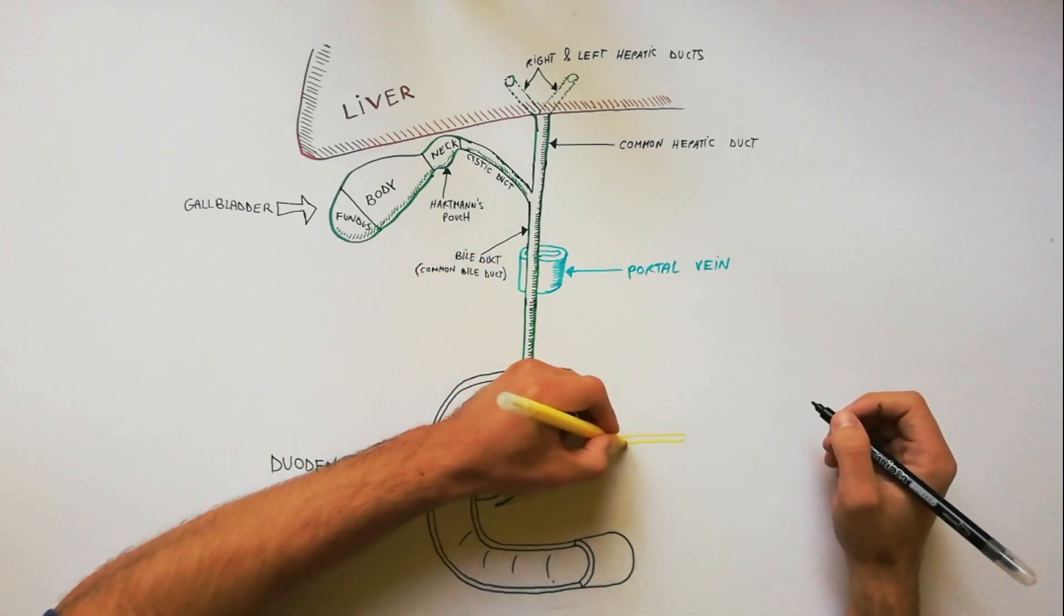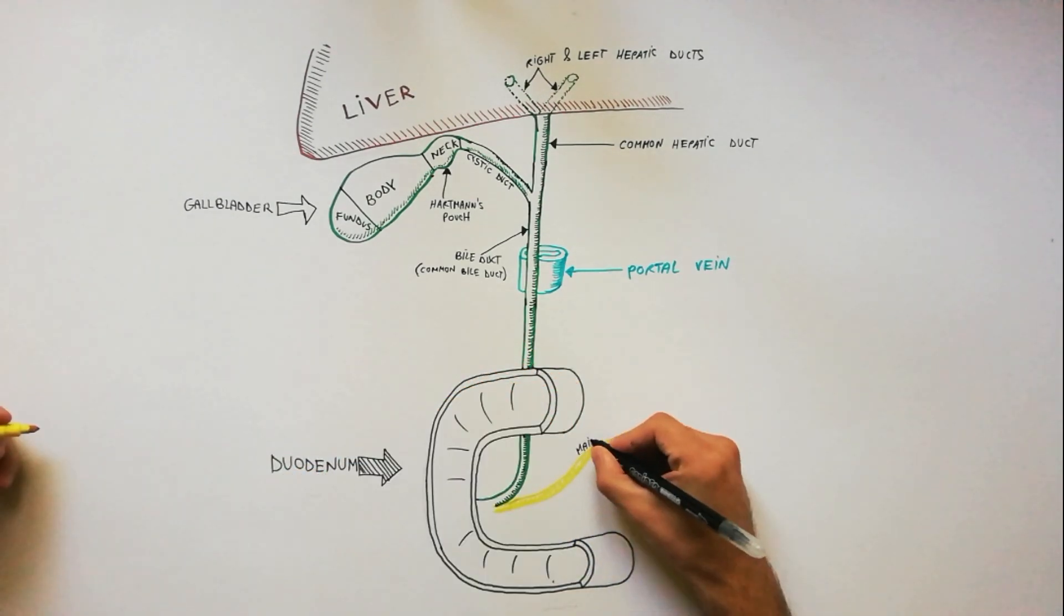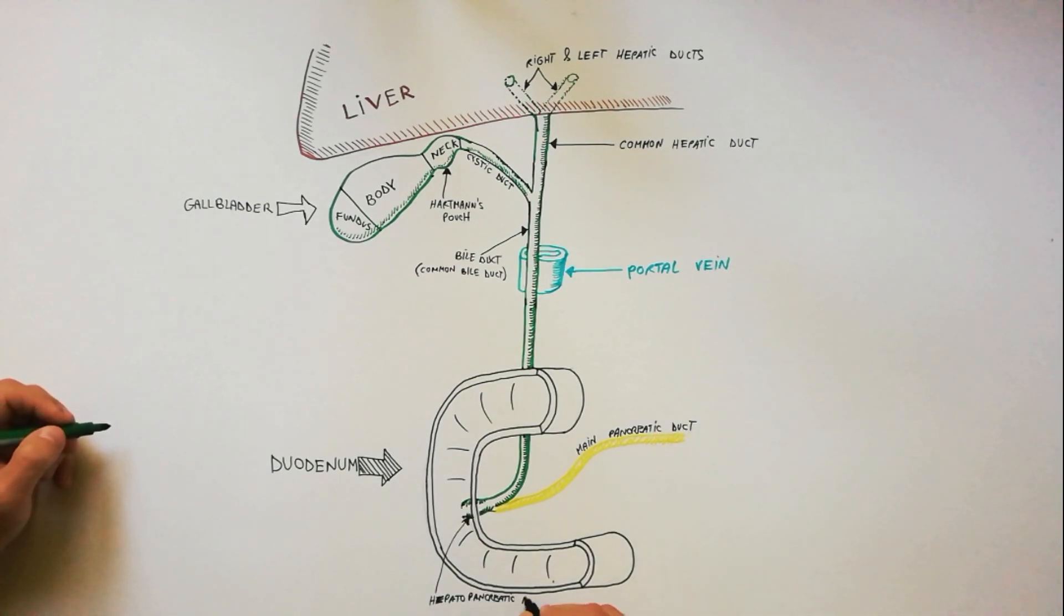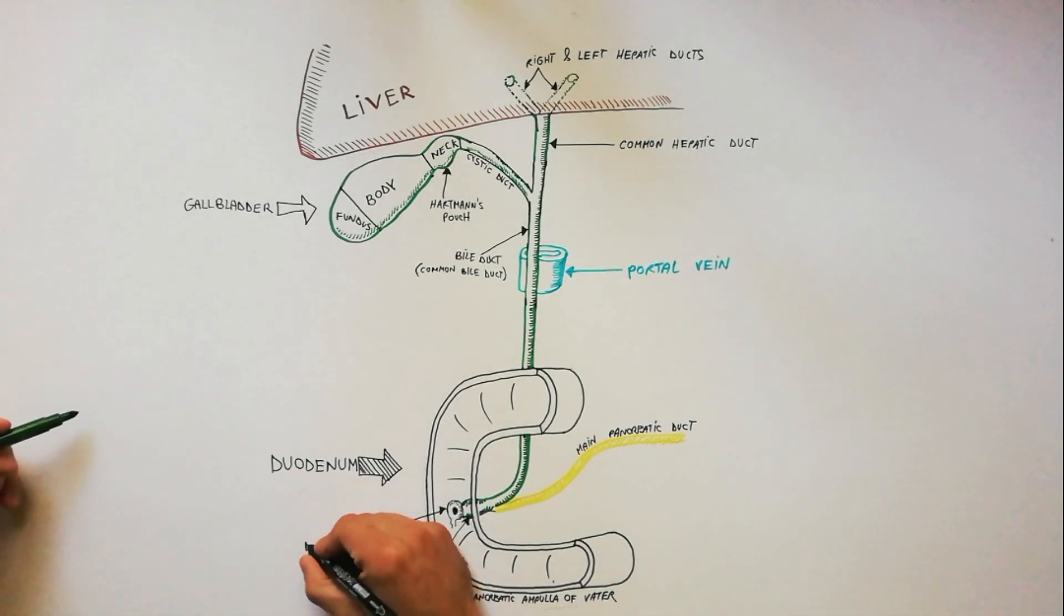Before emptying into the second part of duodenum, it fuses with the main pancreatic duct, thus creating the hepatopancreatic ampulla of Vater, which bulges the mucous membrane of duodenum inward, forming the major duodenal papilla.